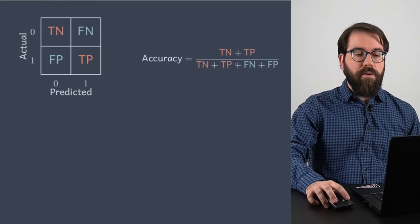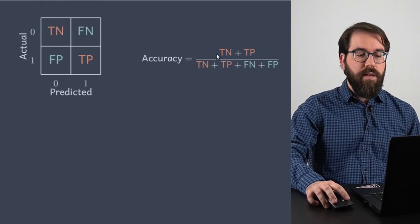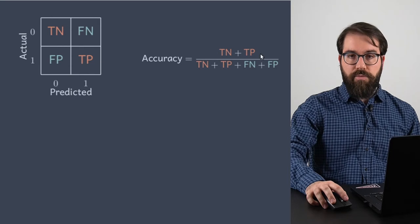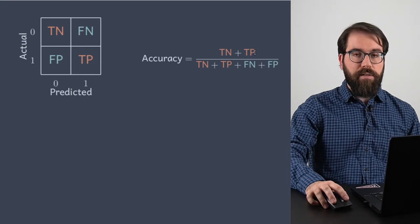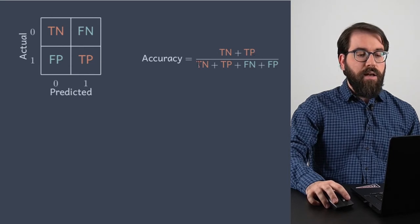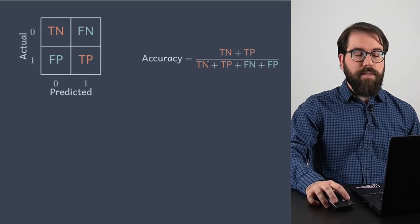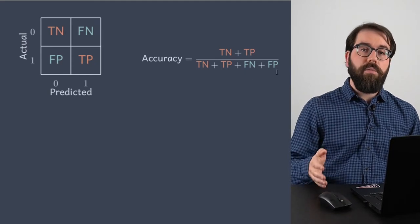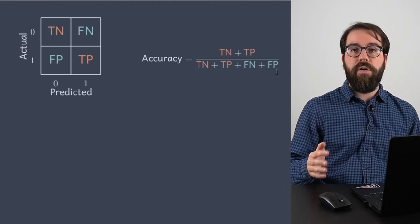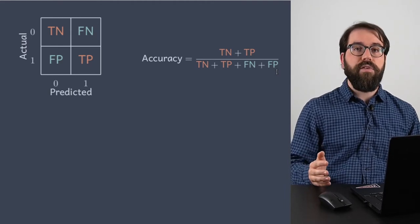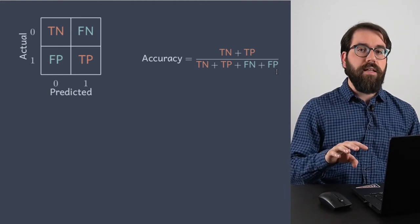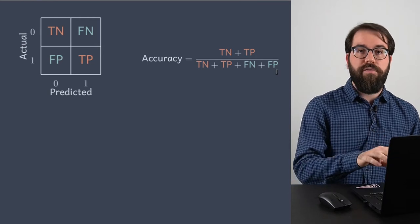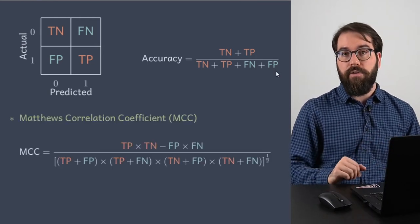The accuracy, using the same colors as in the confusion matrix, is basically the true negatives and true positives in the numerator over the sum of all elements of the confusion matrix. This is basically the total number of records — the total number of examples in the dataset where you are measuring your performance metric, in this case the accuracy.